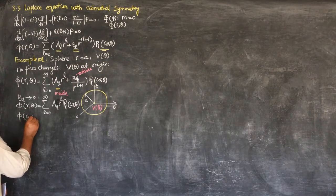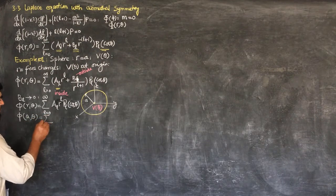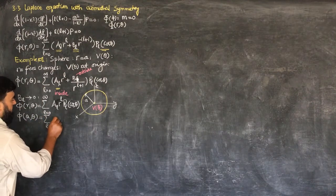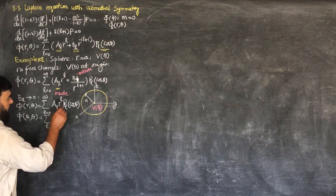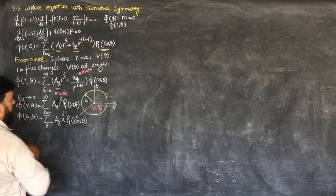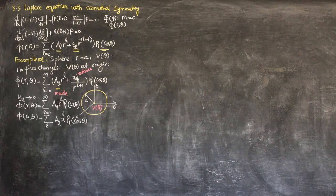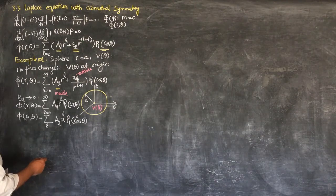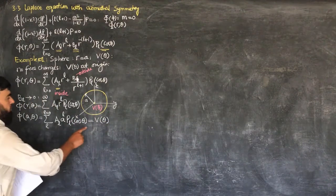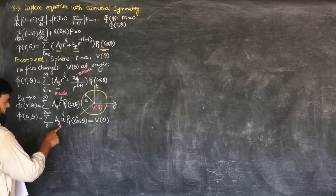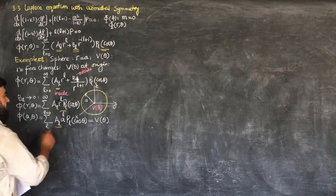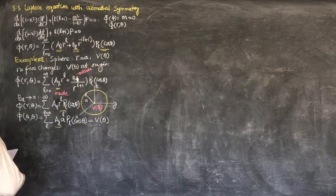Now when we are at the surface of the sphere, phi at R equals A and theta gives us summation on L of A_L times A to the power L times P_L of cos theta. This is of course equal to V of theta. Our V of theta is just the expansion of this relation with two undetermined constants A_L and A to the power L, and we will have to find these.